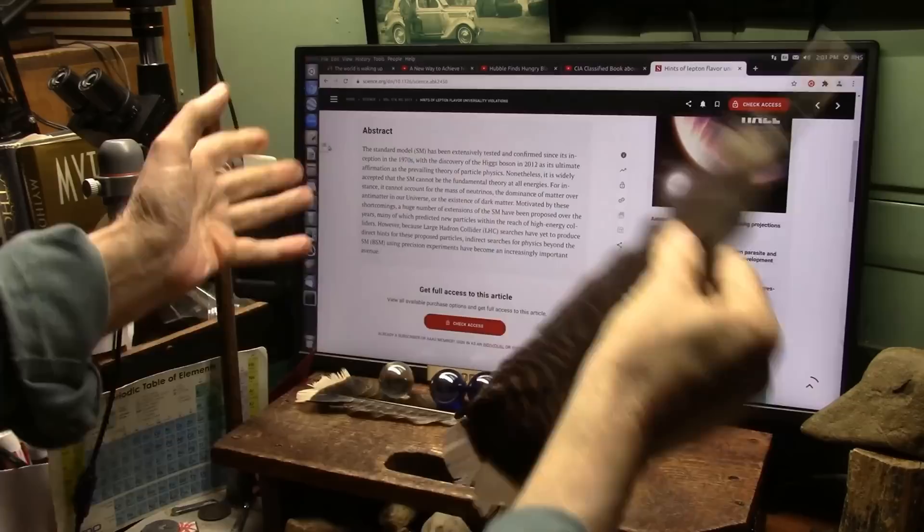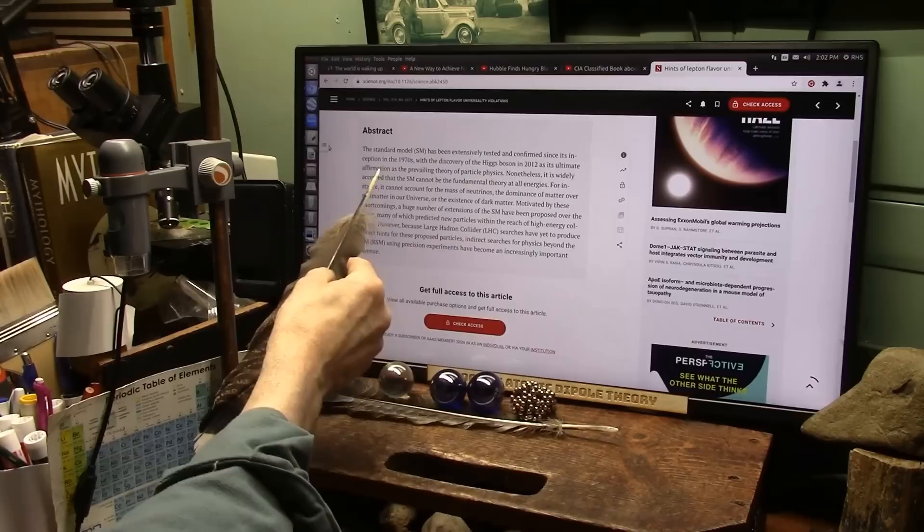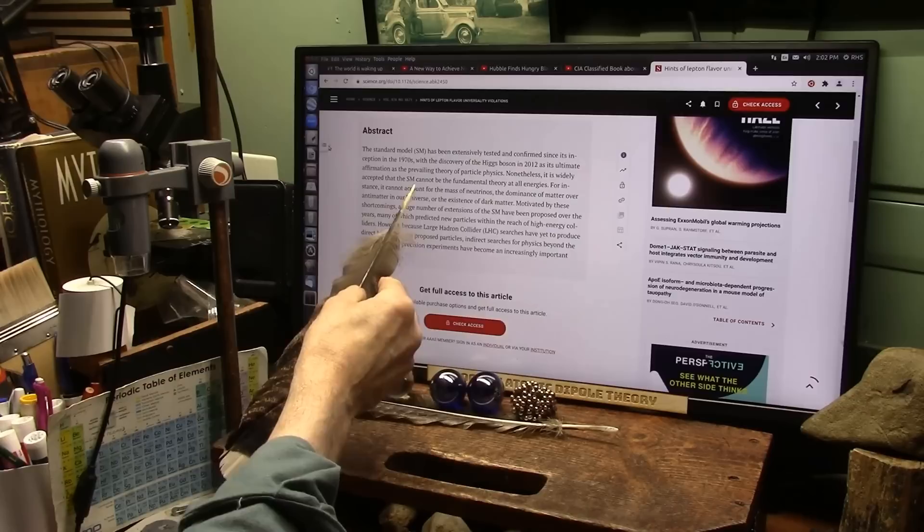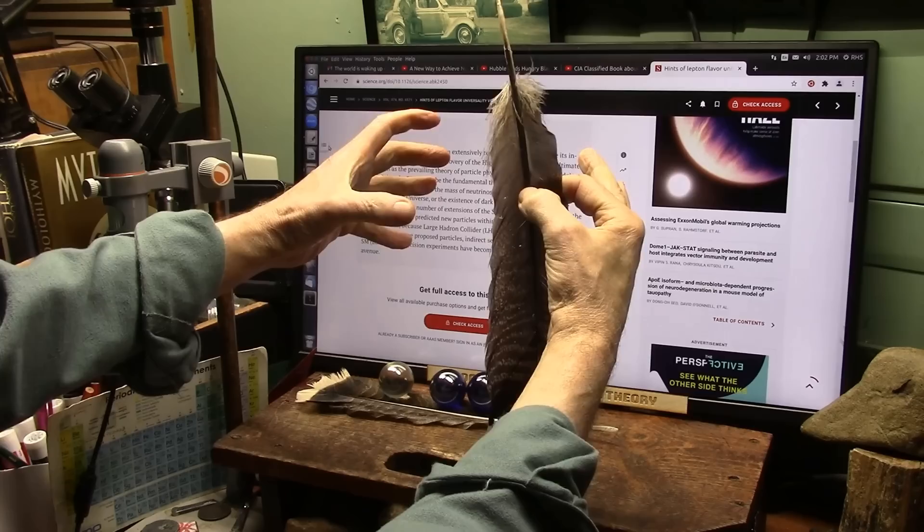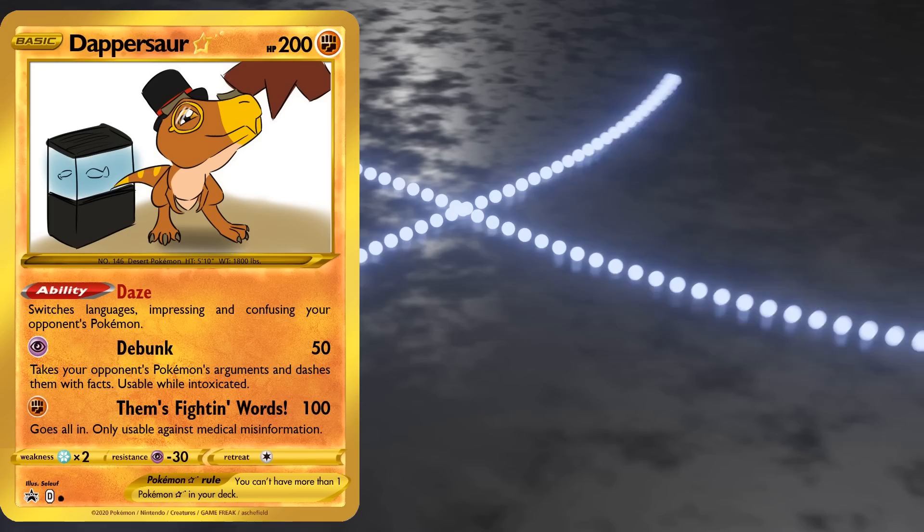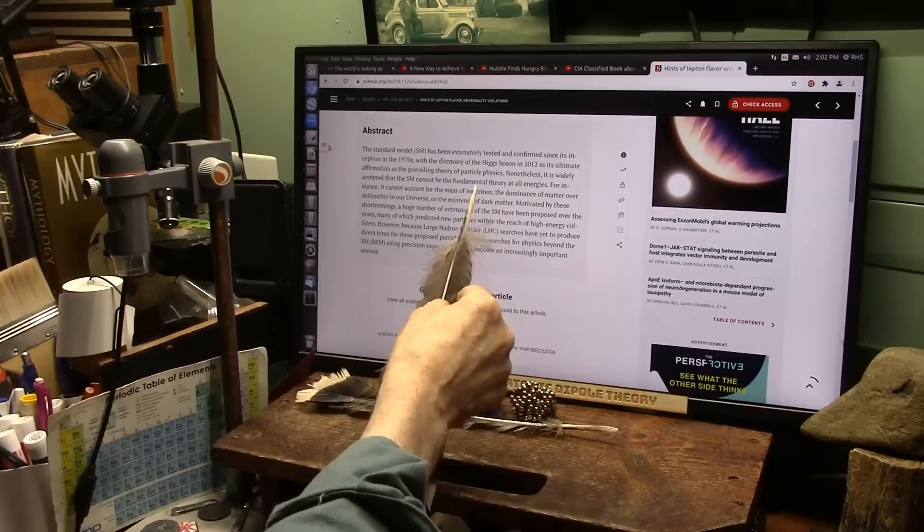The discovery of the Higgs boson in 2012, the ultimate affirmation as the prevailing theory of particle physics. Nonetheless, it is widely accepted that the standard model cannot be the fundamental theory at all energies. It's not the fundamental theory at all because it's one gigantic positive core and little tiny negatives. It doesn't work that way. They're all dipoles. Something which no data, including these known problems with the standard model, has ever suggested.